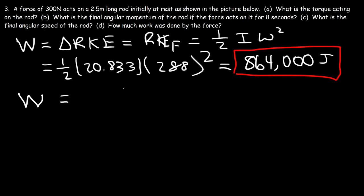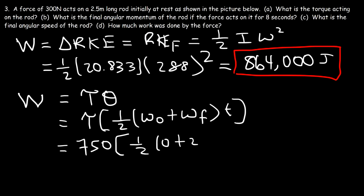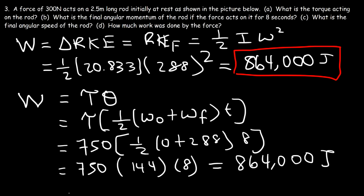The second way is to use this equation: work is equal to the rotational torque multiplied by the angular displacement. The angular displacement can be calculated as 1/2 times the sum of initial and final angular speed, multiplied by the time. The torque was 750, the initial angular speed is 0, the final is 288, and the time was 8 seconds. Half of 288 is 144, so it's 750 times 144 times 8, which gives the same answer of 864,000 joules. There are multiple ways to calculate the work done.